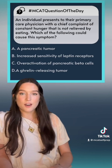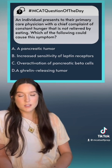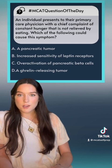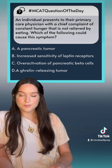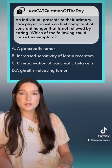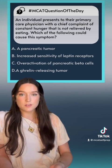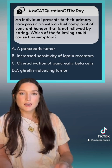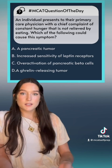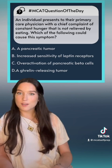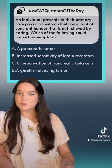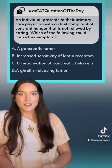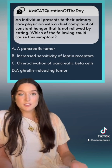C: over-activation of pancreatic beta cells. What do pancreatic beta cells release? Insulin. Insulin is going to decrease blood sugar levels, and it is also going to stimulate the release of leptin. As we just discussed, leptin decreases our hunger. Can we say that this answer is wrong? Definitely. So that leaves us with D.